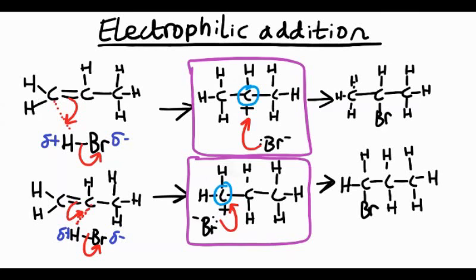The alkyl groups that are joined to that carbon atom push electrons down the bond. It's called the positive inductive effect, and that electron pushing stabilizes the positive charge.